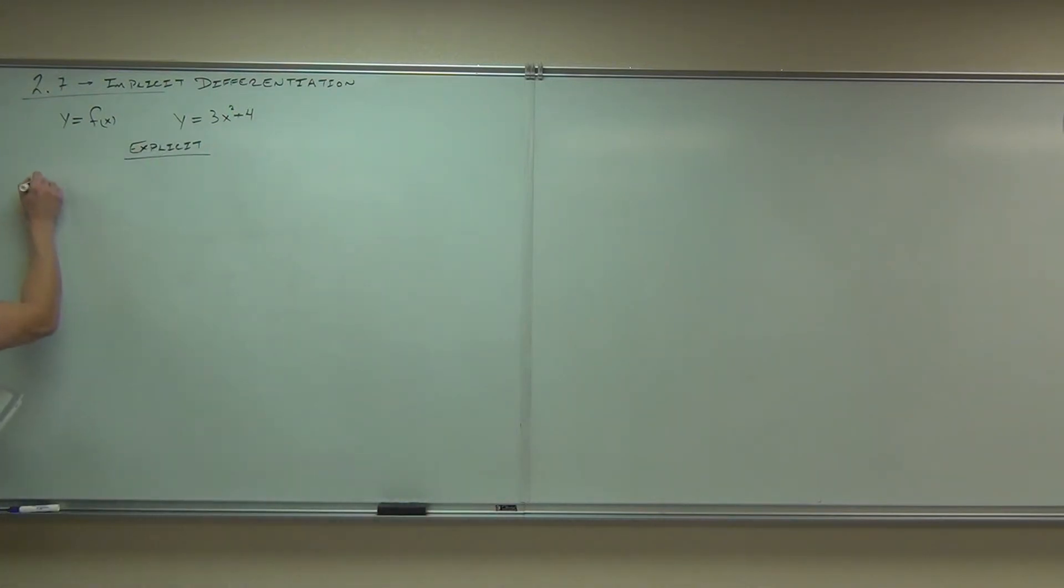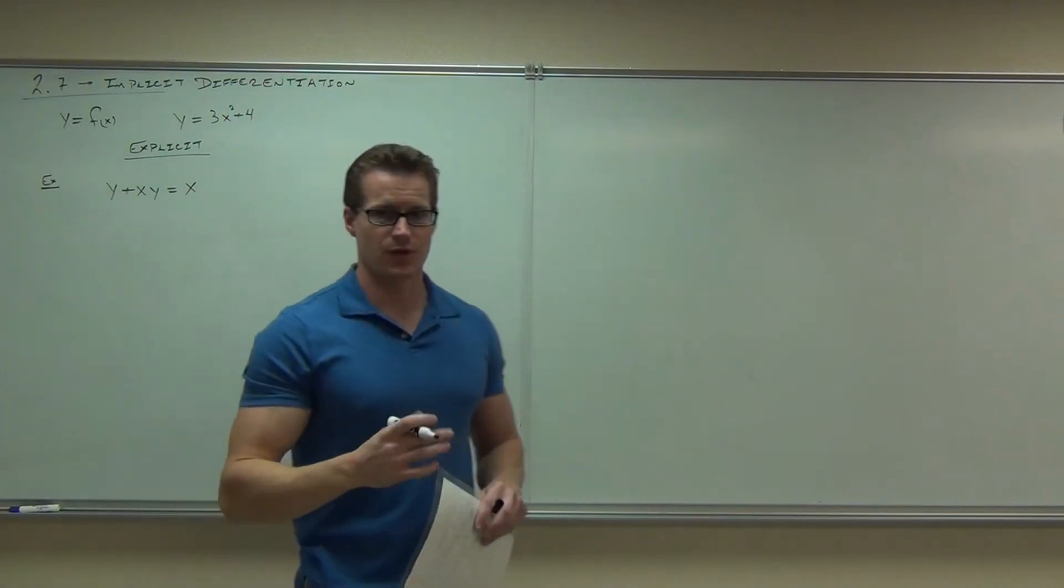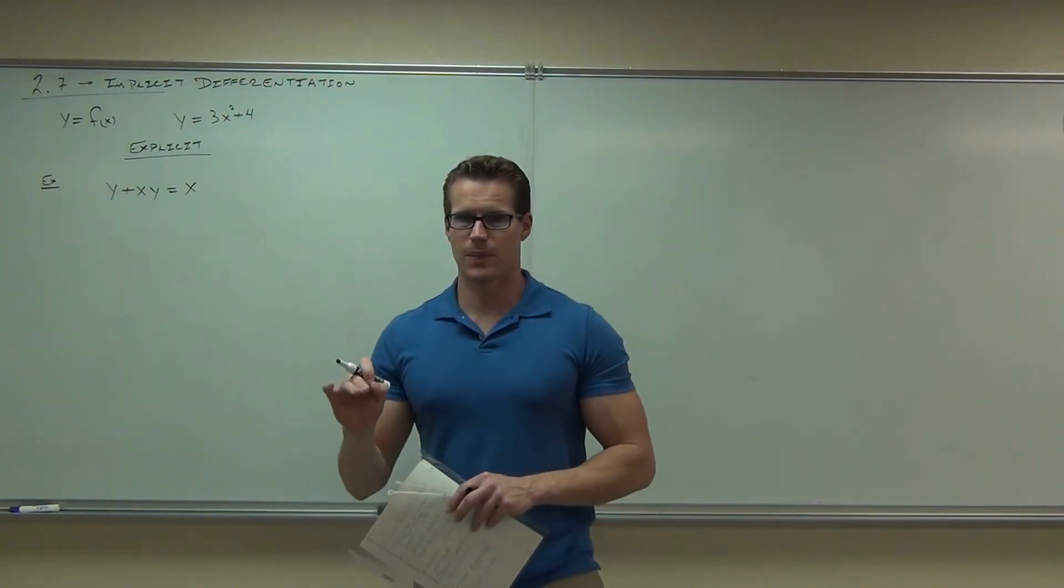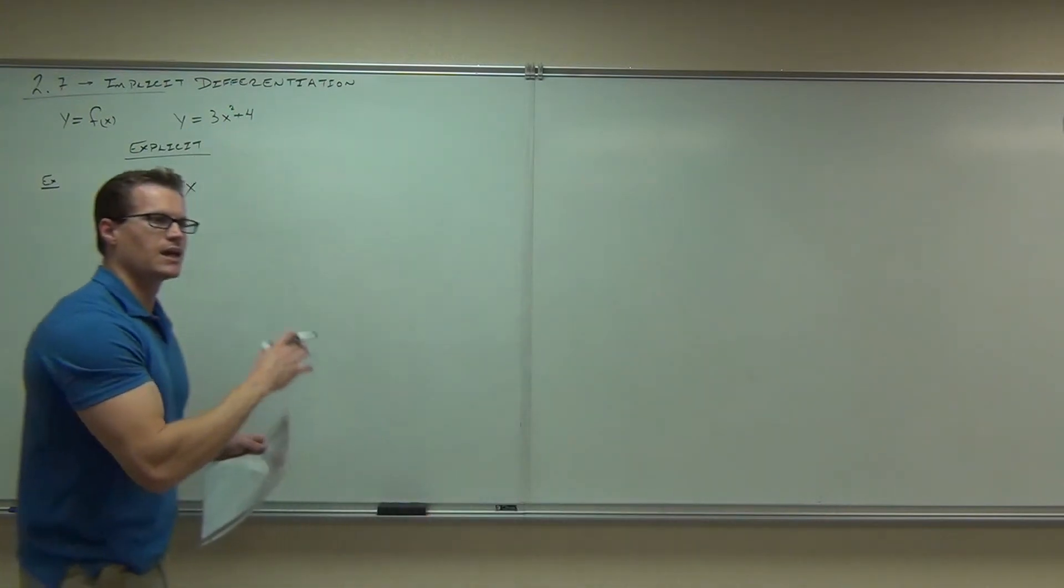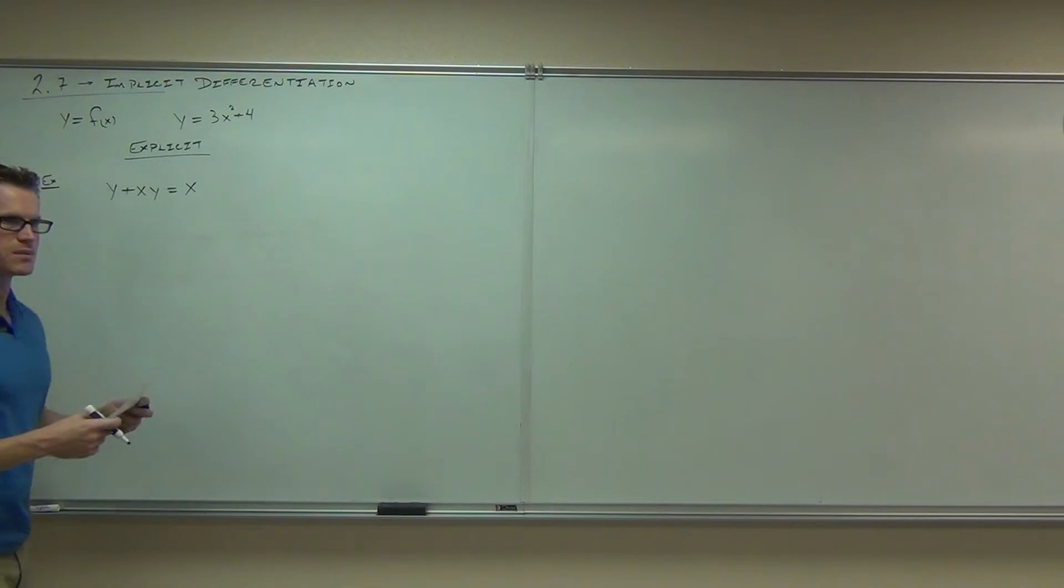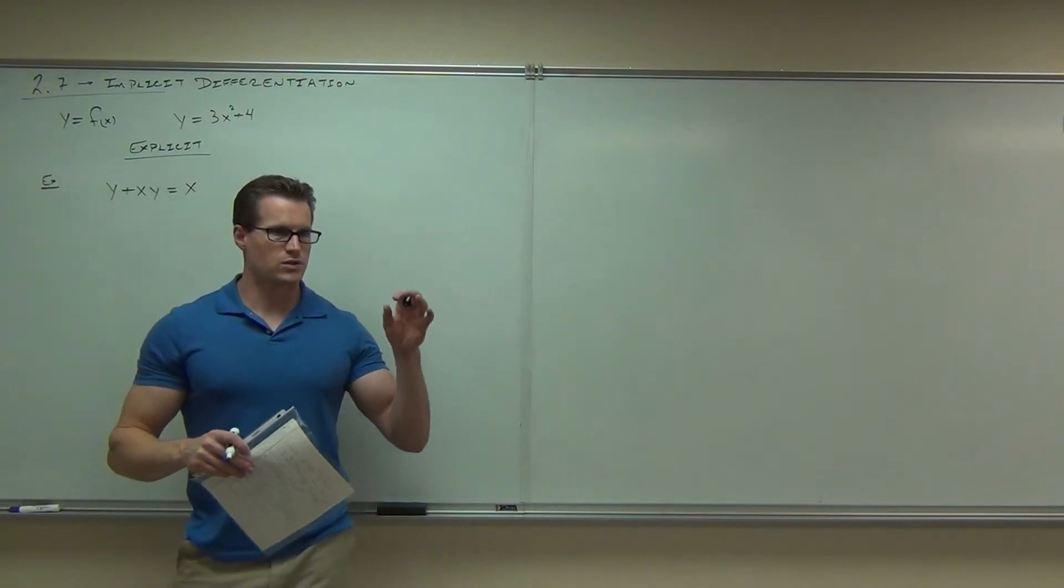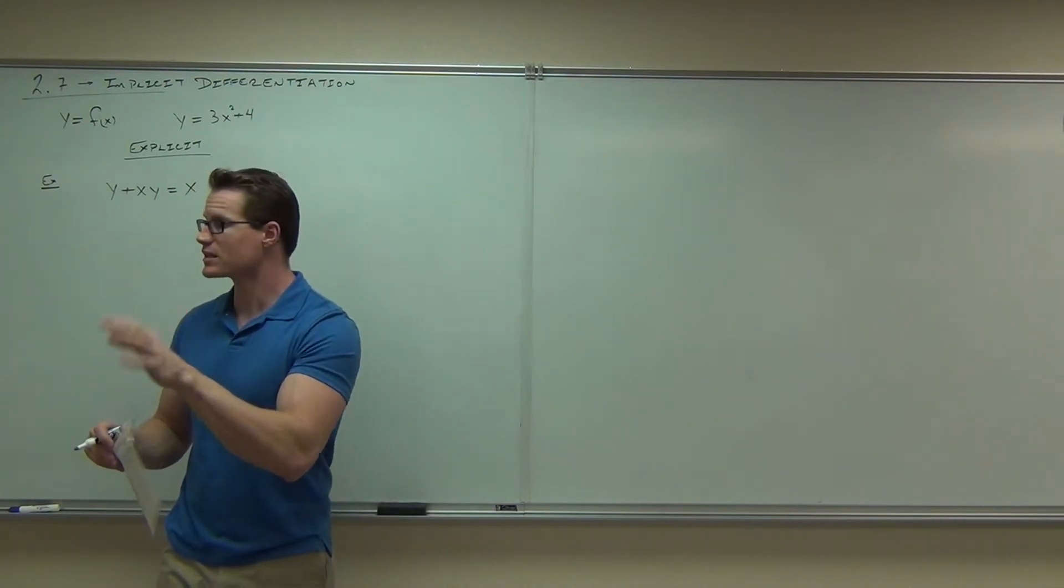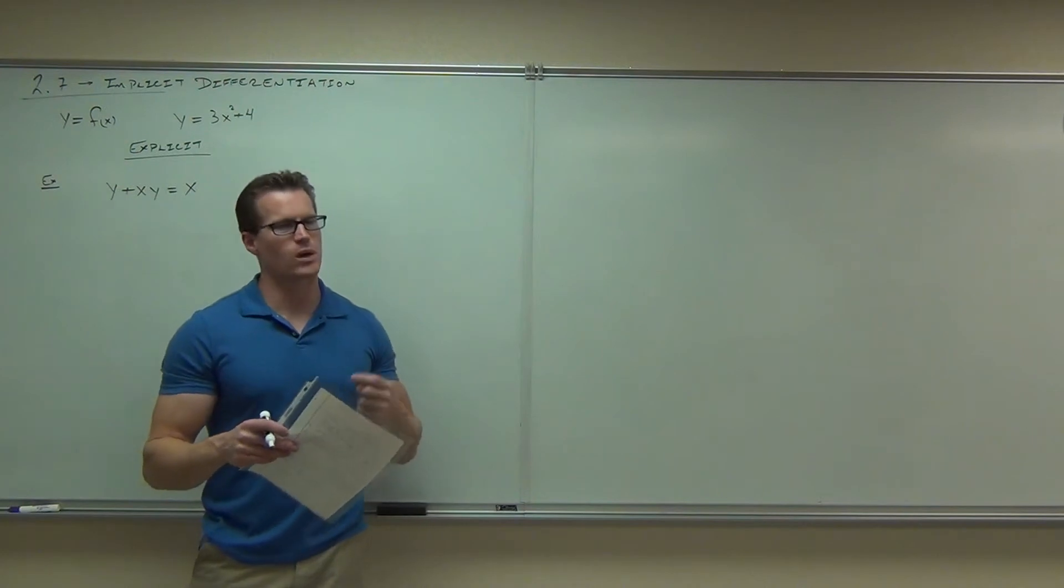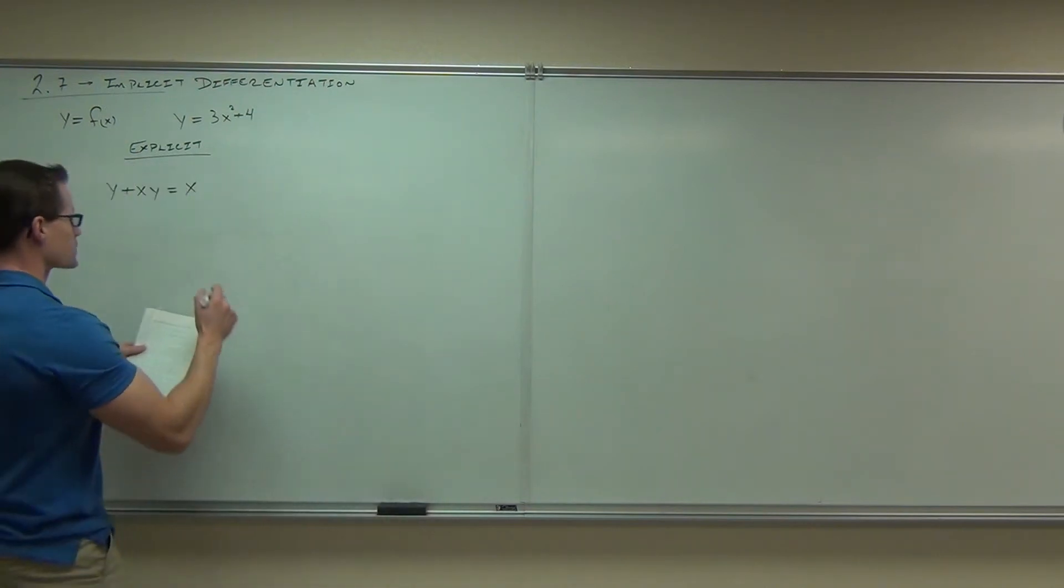On the other hand, is this an explicit function? Is y solved for itself, and then x is on the other side? As a matter of fact, you see y is mixed in with x's. This is called implicit form. Implicit means, yes, there's a y there, and you're going to say that y is a function of x, but it's not written as y equals. So y is still a function of x, it's just bound up in the problem. That's what implicit means. So this is implicit.